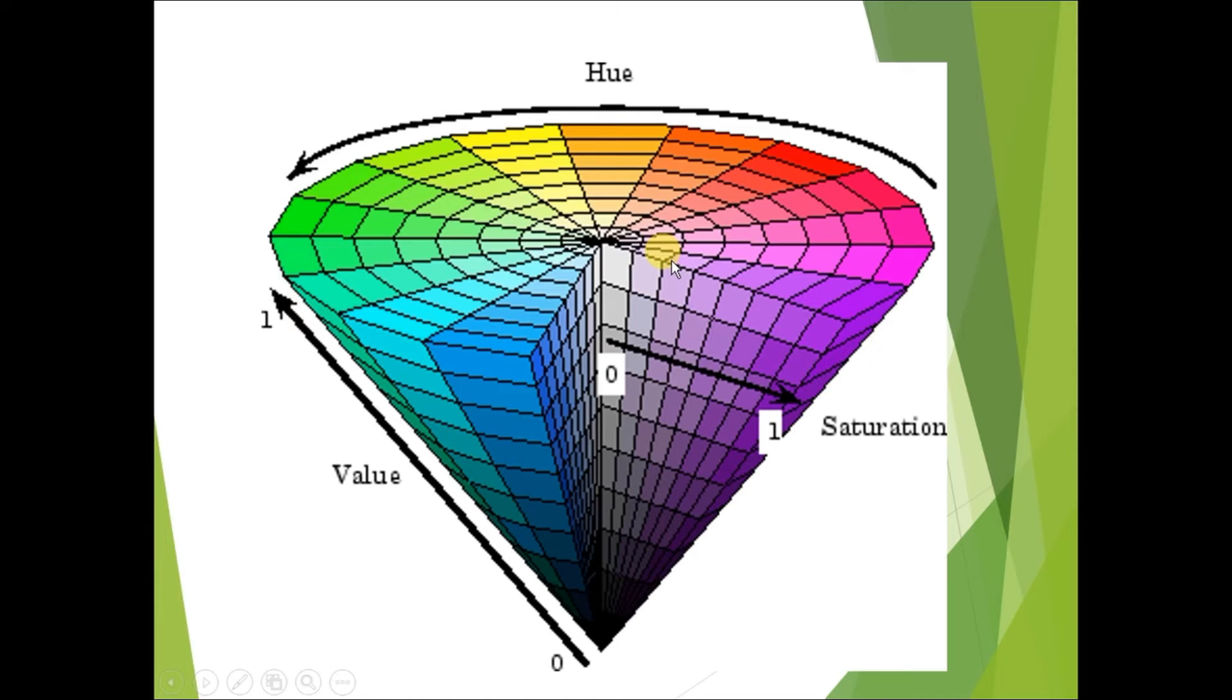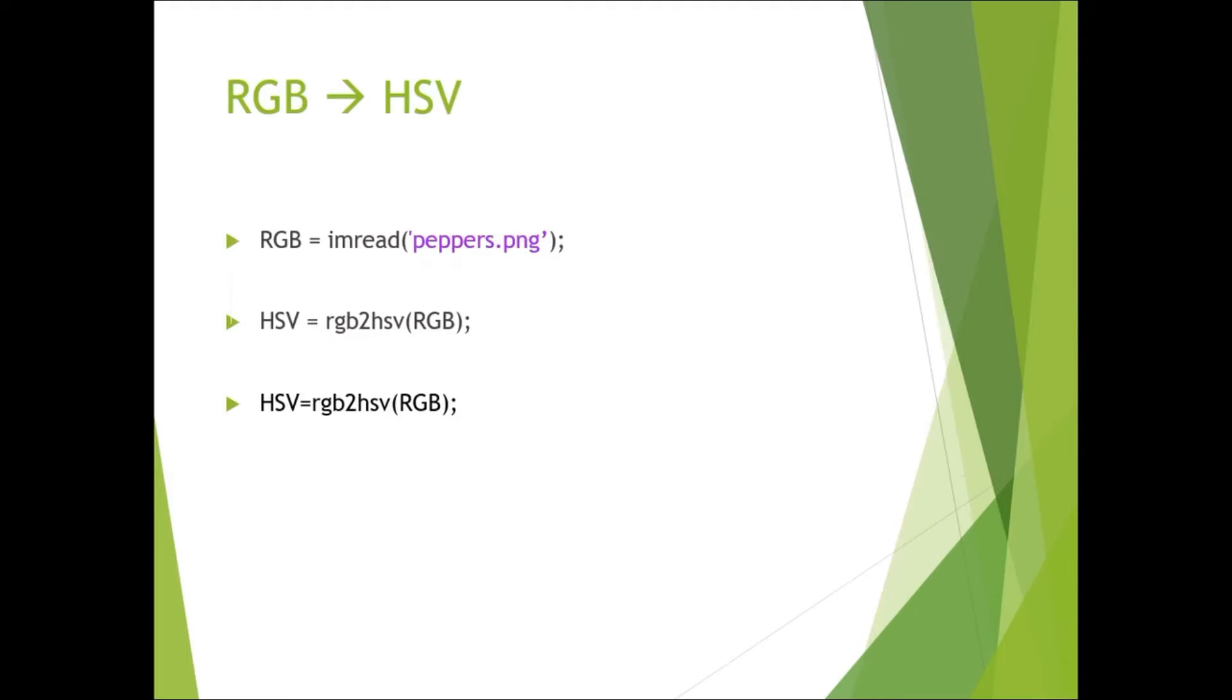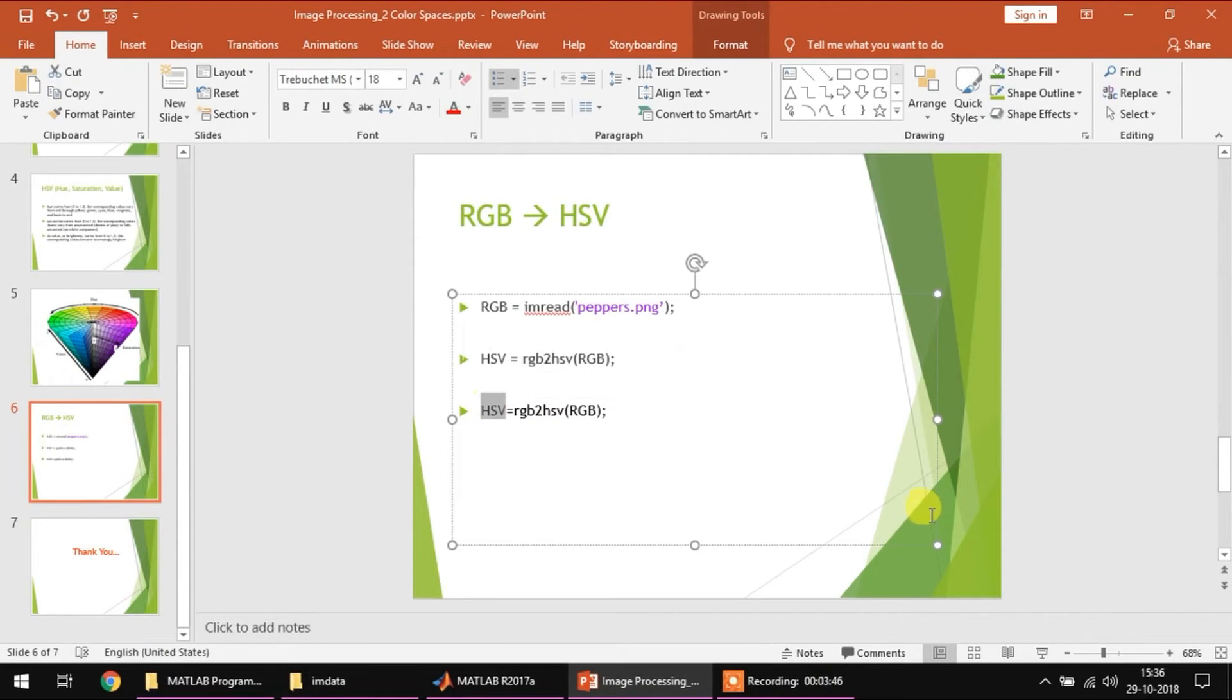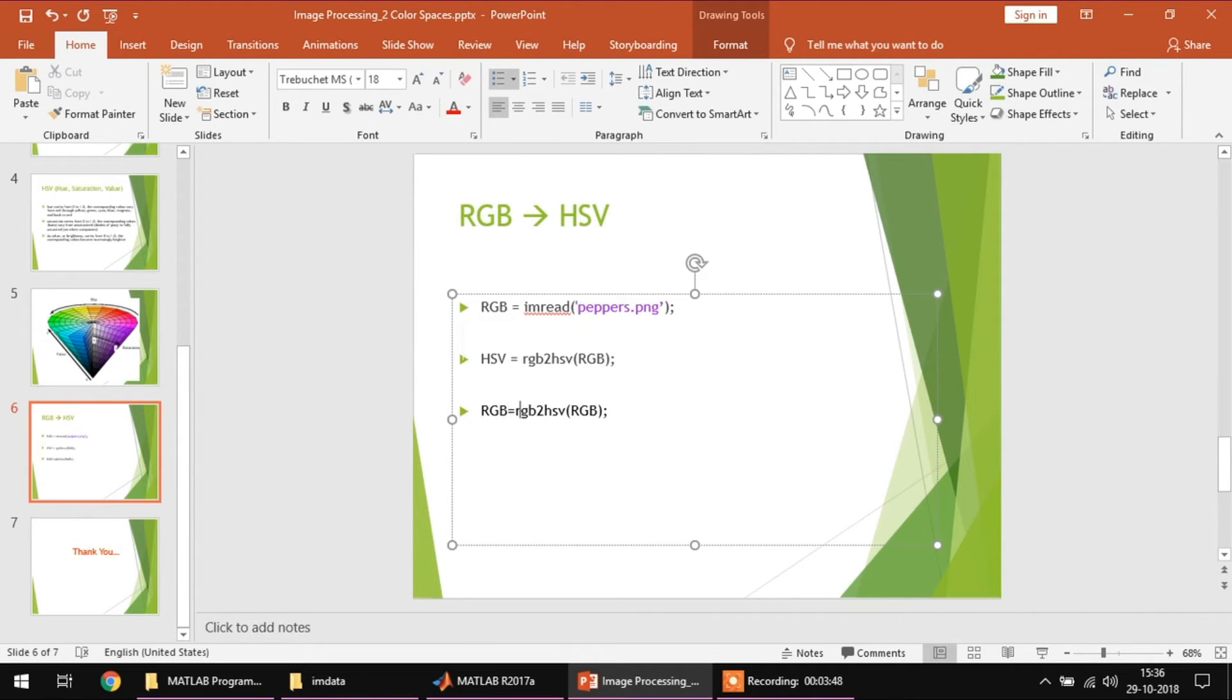We can convert an image from RGB to HSV, do some processing, and change it back to RGB. As said before, MATLAB's digital image processing toolbox gives us easy to use functions to do all these things. The two functions we are going to use are RGB to HSV and HSV to RGB.